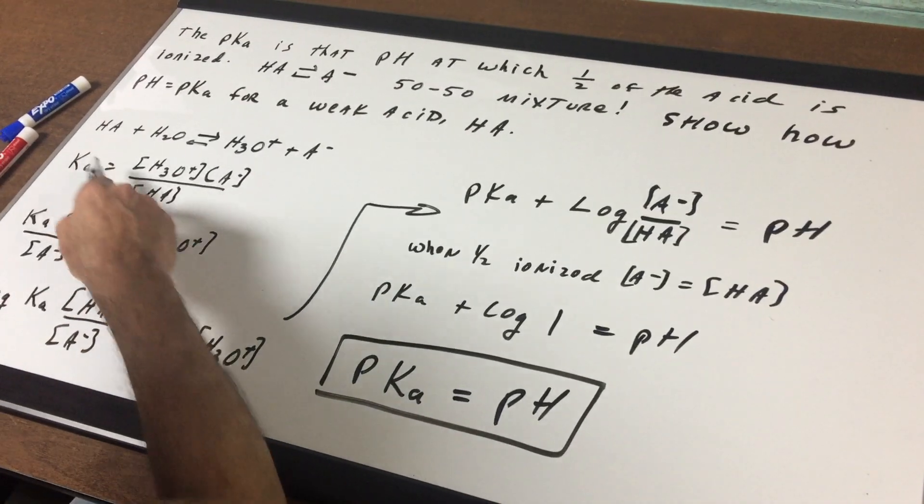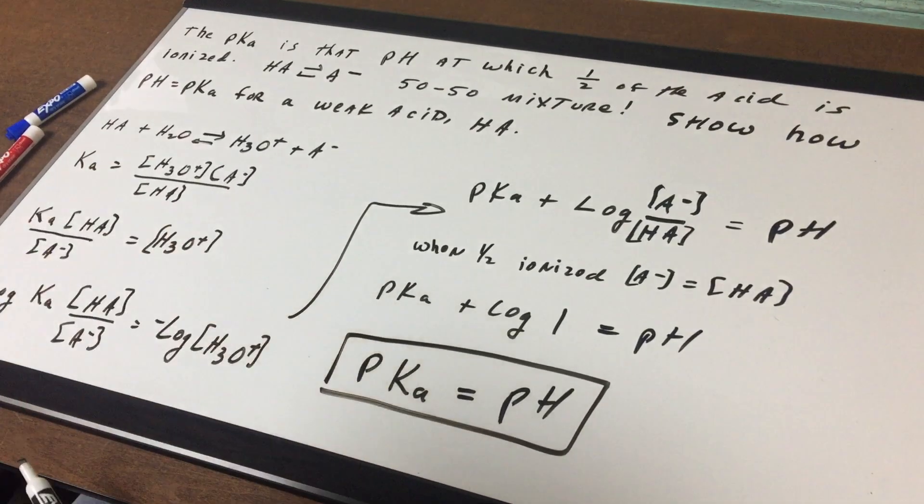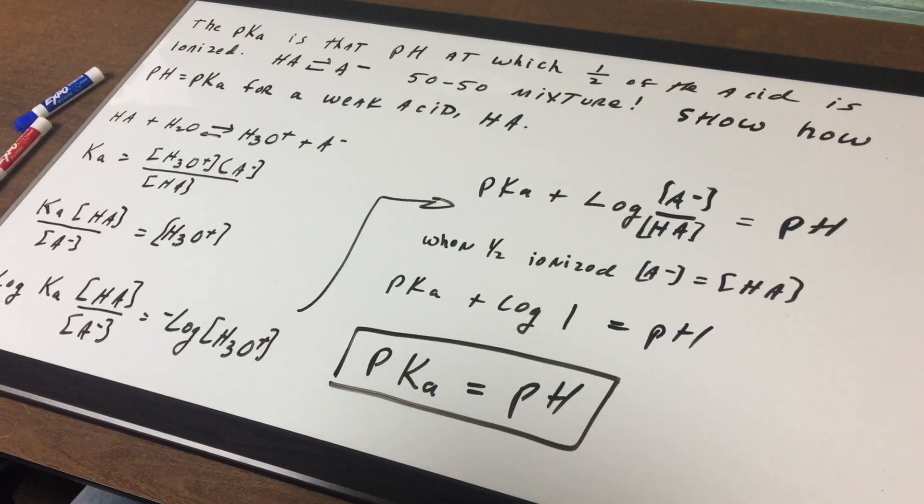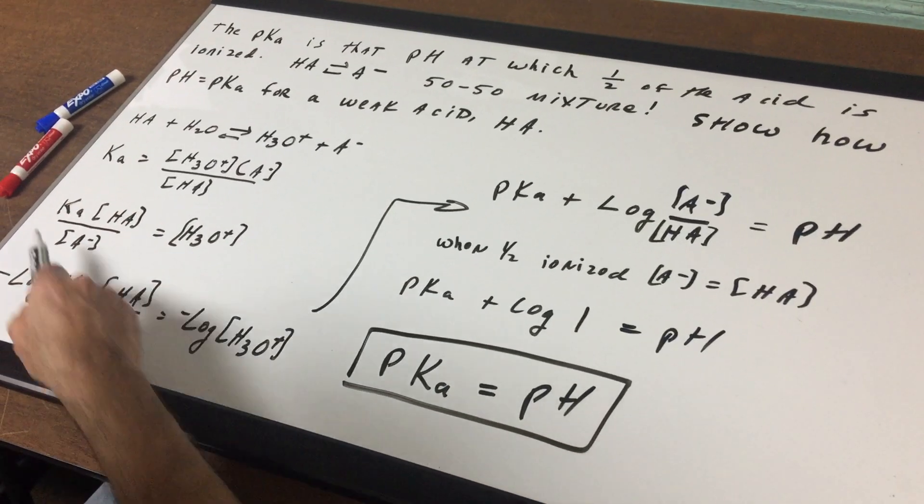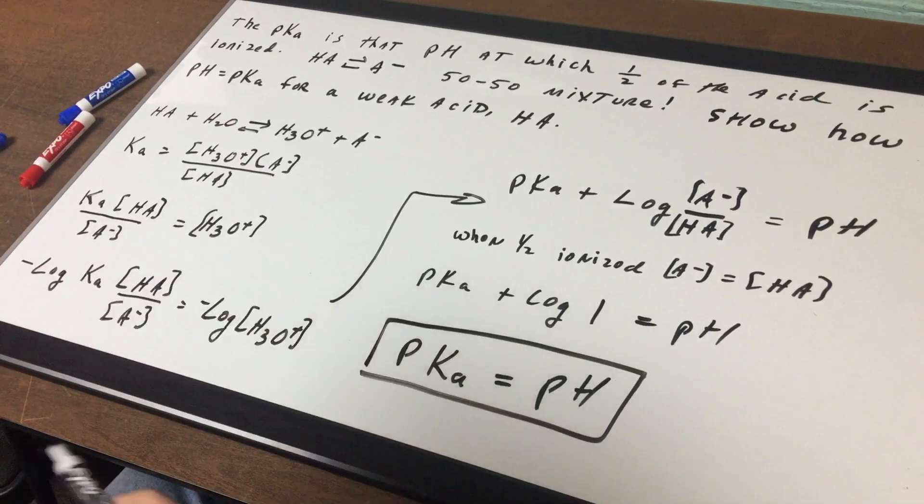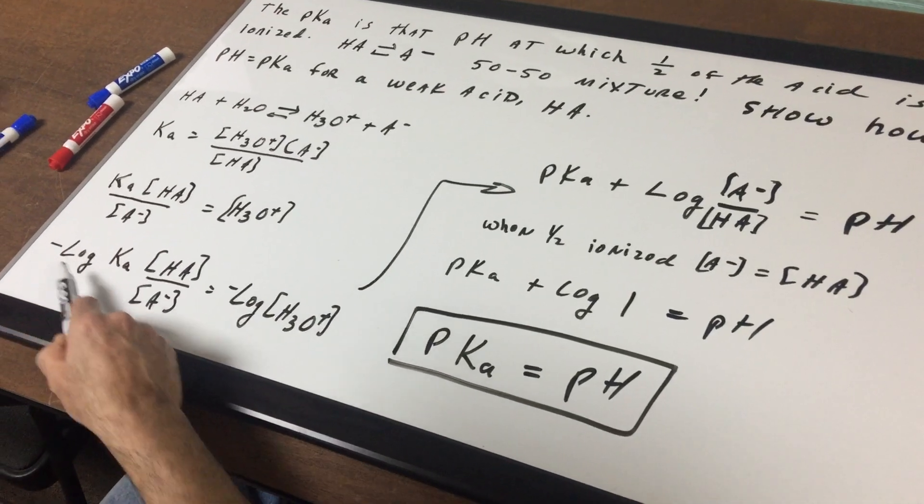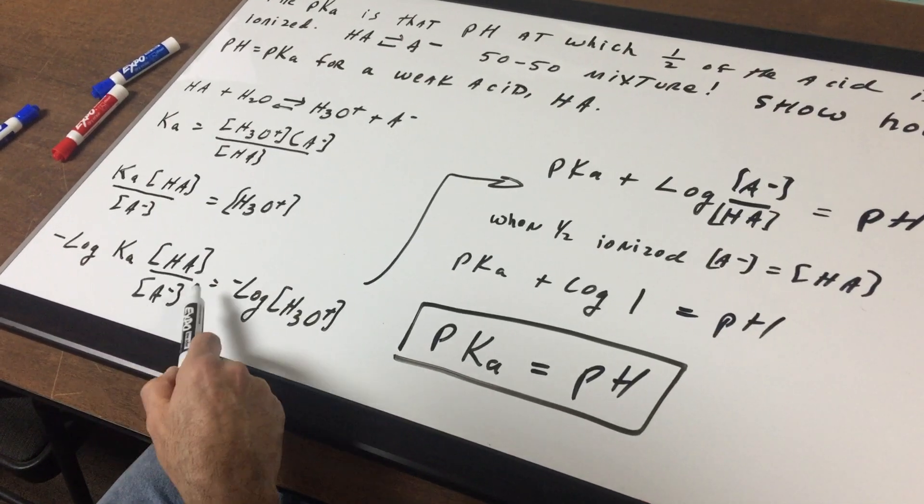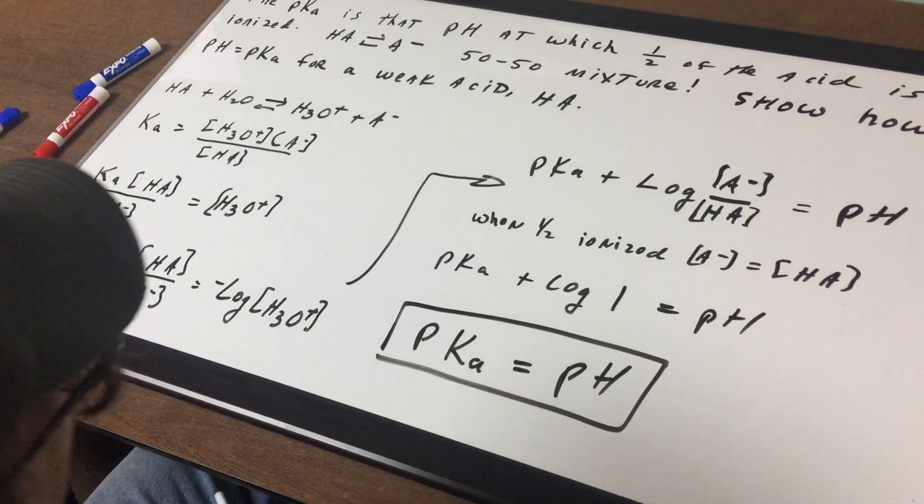I'm going to cross multiply and divide by A minus, and I'm going to isolate the H3O plus alone. I'm going to take the negative log of both sides. So I get minus log of Ka, HA over A minus is minus the H3O plus.